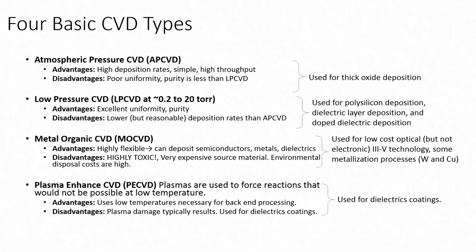There are four basic types of CVD. The first is atmospheric pressure CVD (AP-CVD), which has advantages of high deposition rate, simplicity, and high throughput. Disadvantages are poor uniformity and lower purity compared to LP-CVD. AP-CVD is used for thick oxide deposition.